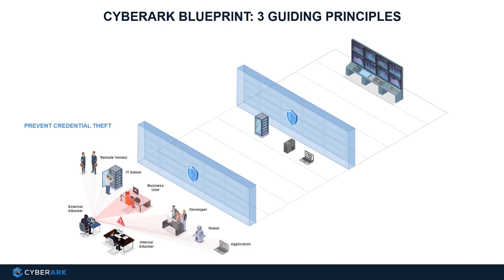First, any identity can become privileged under certain conditions. That's why nearly 100% of all advanced attacks today rely on the exploitation of privileged identities and their credentials to reach a business's most sensitive data and infrastructure. To keep both external and internal adversaries from accessing your keys to the kingdom, you must first prevent theft of critical credentials — such as infrastructure-as-a-service admins or domain admins — that could be used to conduct network takeover attacks or compromise key infrastructure. By implementing security controls such as passwordless authentication, session isolation, credential theft detection and blocking, as well as removing hard-coded credentials from highly privileged third-party applications, you can protect these powerful accounts and rapidly drive down risk.